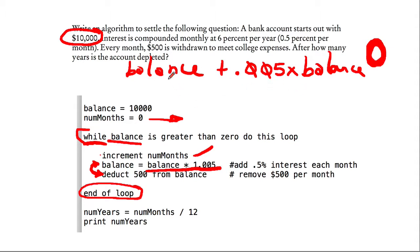If you factor this out, we get 1 plus 0.005 or 1.005. So this is going to compute the new balance, taking into account the monthly interest. Then we deduct 500, and you could put $500 from the balance.